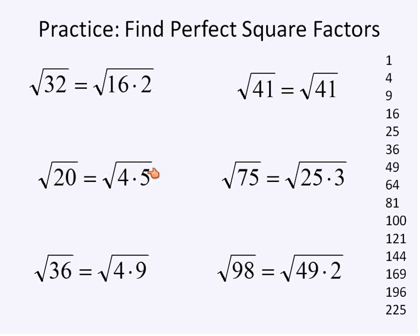20 is 4 times 5. 4 is our perfect square factor. 36 is actually an interesting one because 36 is a perfect square. So we could have solved it that way. But it's also a perfect square times a perfect square, 4 times 9. So we've got some perfect square factors and it's a perfect square itself. 41. The square root of 41 has no perfect square factors. The square root of 75 has a factor of 25 times 3. And then 98 is 49 times 2. So that's how we would find these in their square factors, finding our perfect square factors.